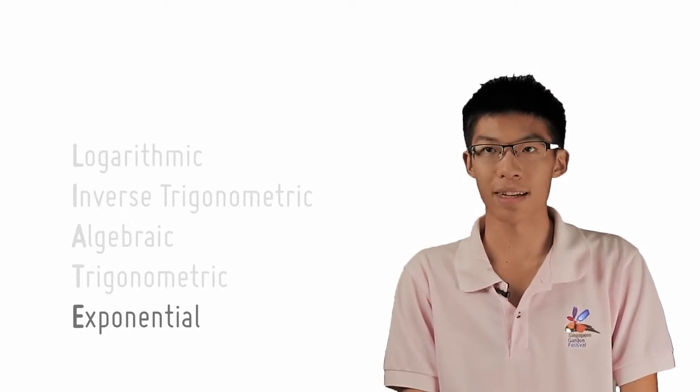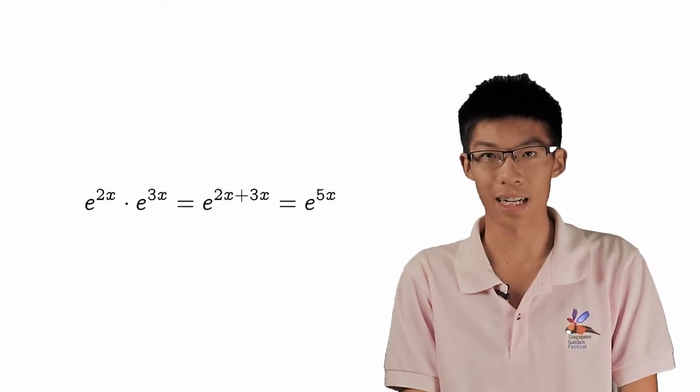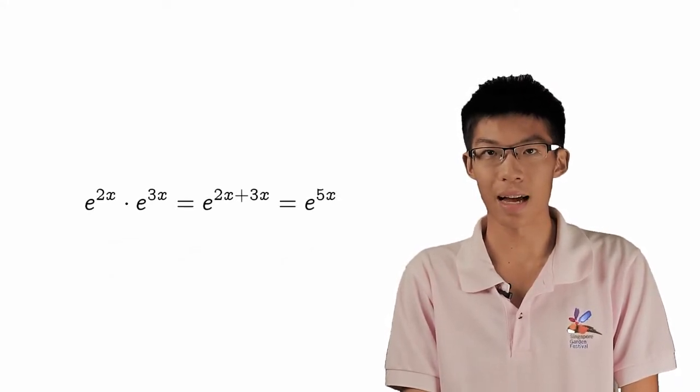For exponential functions, multiplying two exponential functions with the same base is the same as adding their exponents. A similar thing happens for division.